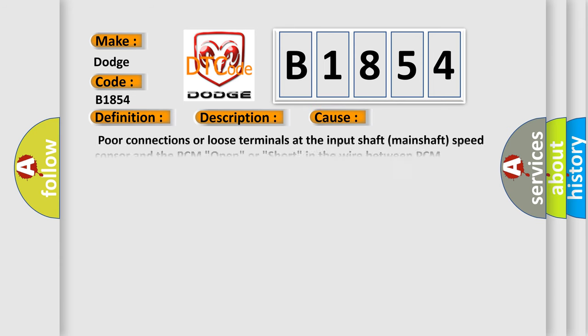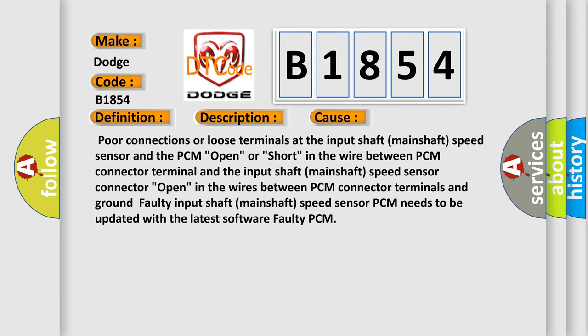This diagnostic error occurs most often in these cases: Poor connections or loose terminals at the input shaft (mainshaft) speed sensor and the PCM; open or short in the wire between PCM connector terminal and the input shaft (mainshaft) speed sensor connector; open in the wires between PCM connector terminals and ground; faulty input shaft (mainshaft) speed sensor; PCM needs to be updated with the latest software; faulty PCM.